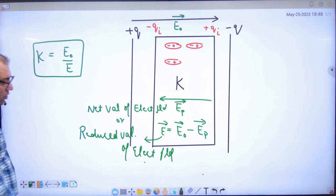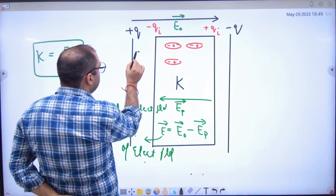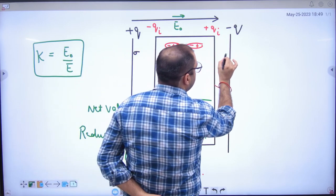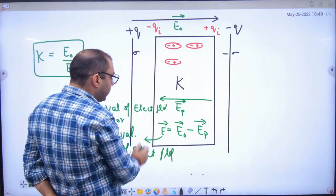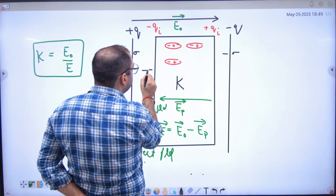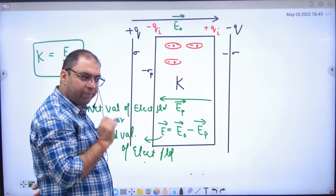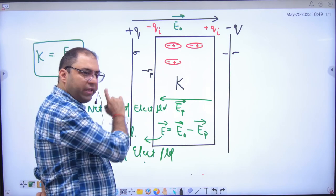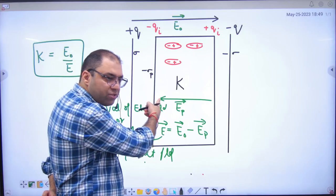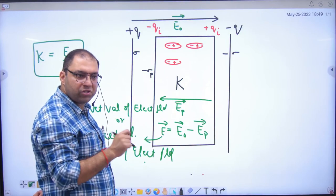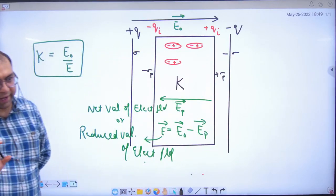And last one important thing is that if this plate of sigma is σ, then this plate is minus σ, but this sheet of left side is minus σₚ because σ is charge upon area. This area will be the same for plate and dielectric, so σₚ will be the same. So here what will be plus σₚ. What is the point clear here?